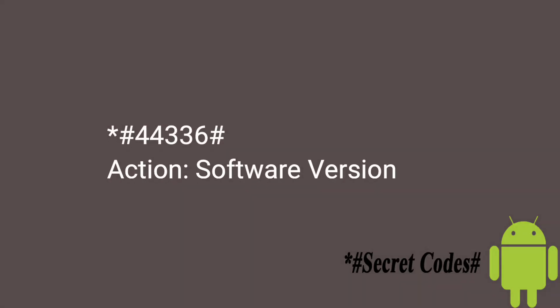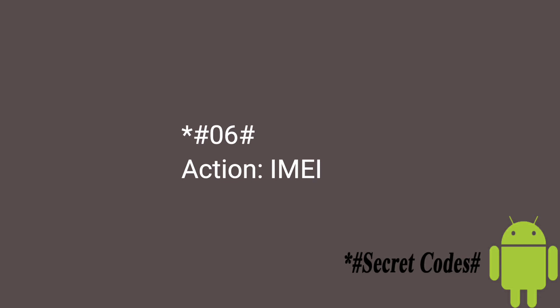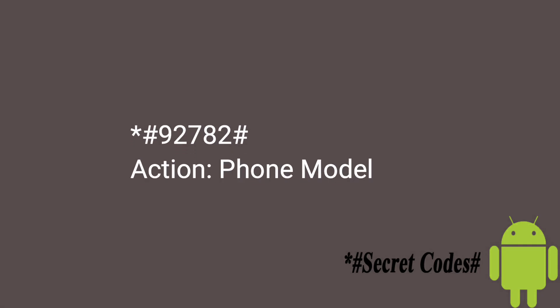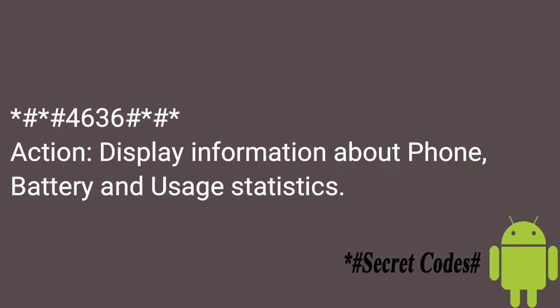Let's see which code shows what information. Firstly, to see your phone's software version, press this code. Next, to know your IMEI, press this code — these codes will show your IMEI, and this code works on all GSM phones. Next, to know your phone model, press this code.